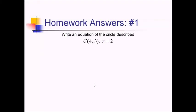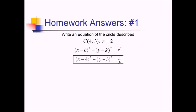For number one, we just want to write the equation of the circle with the center (4, 3) and a radius of 2. Since we already have the center and the radius, we'll just write the center-radius general form: (x − h)² + (y − k)² = r². This will then be (x − 4)² + (y − 3)² = 2² = 4.